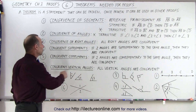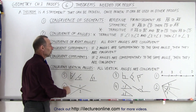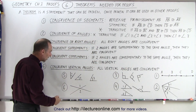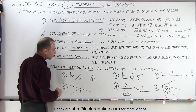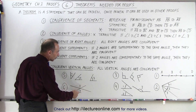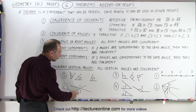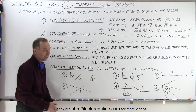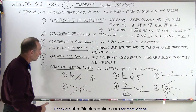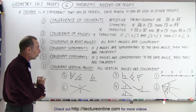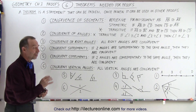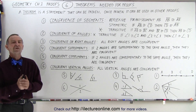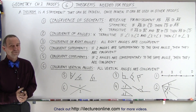And finally, congruent vertical angles. All vertical angles are congruent. Here we have an example: two lines that intersect. The opposing or opposite angles are congruent because they're vertical angles, and if they're vertical angles, they must be congruent. Those are the six theorems that come in really handy when we try to prove proofs in geometry. And that's how it's done.